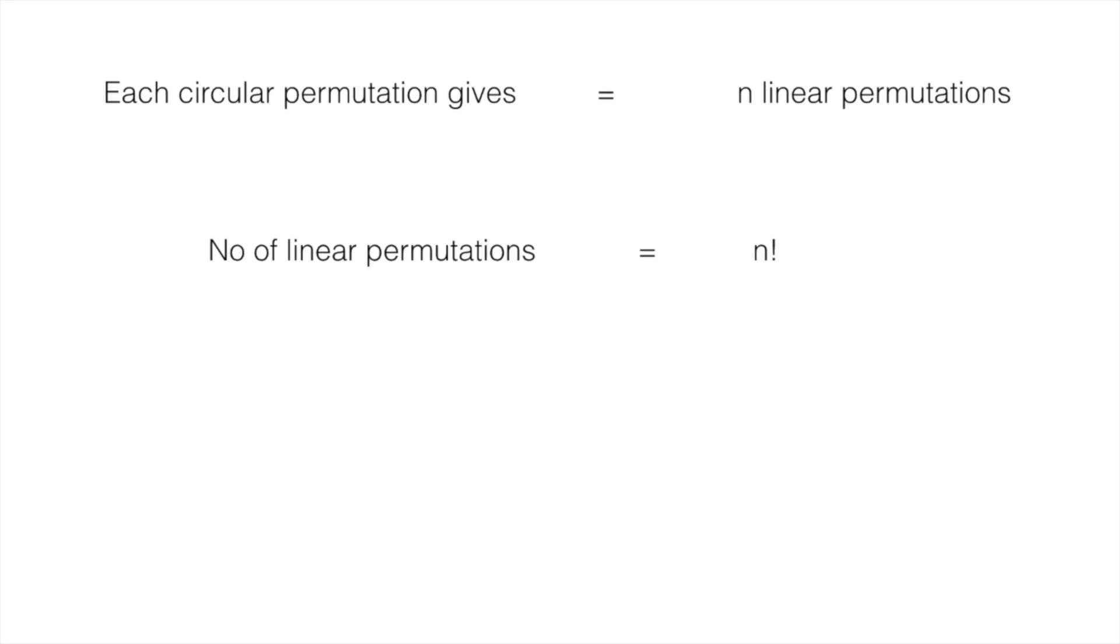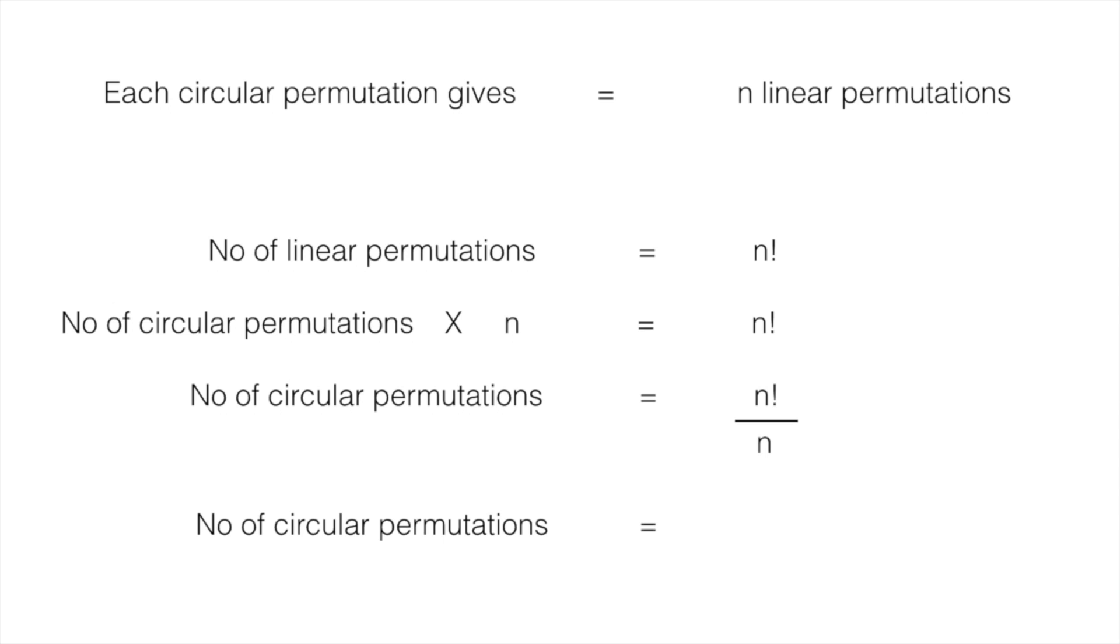thus the number of circular permutations multiplied by n should be n factorial. This equation, when solved, gives us n minus 1 factorial.